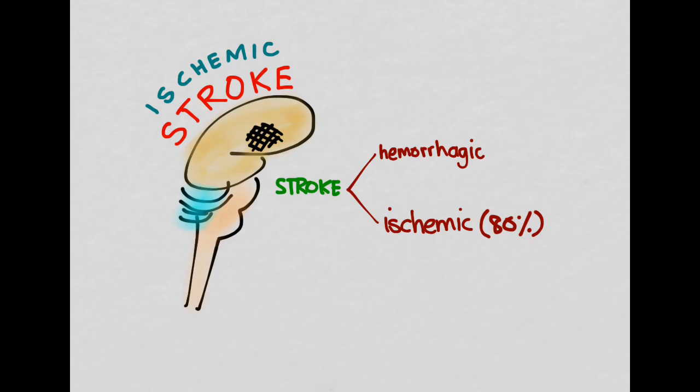And so of the hemorrhagic strokes, there are two subtypes. The first is intracerebral, and as the name implies, it's bleeding inside the brain. So here I've depicted a CT scan, and if blood looked red on a CT, which it doesn't, it looks white, you would see that it would be inside the brain here.